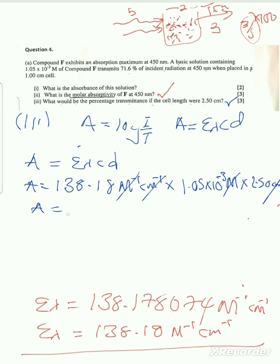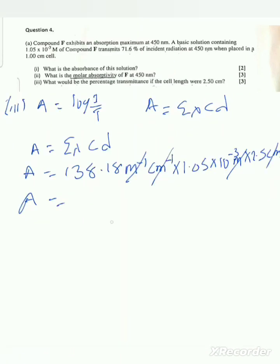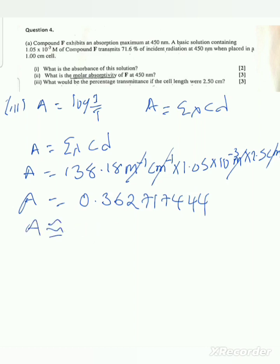The centimeter units cancel. Calculating: 138.18 times 1.05 times 10 to the power negative 3 times 2.5 gives approximately 0.363. Absorbance has no units.